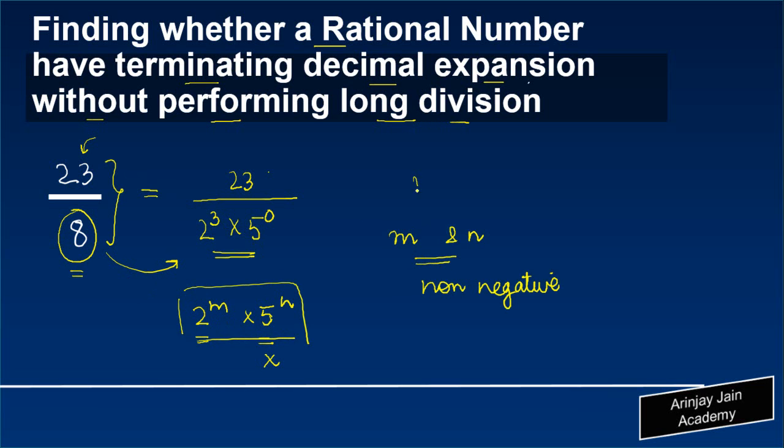In our case, m is equal to 3 which is a non-negative integer and n is equal to 0 which is also a non-negative integer. So effectively both m and n are non-negative integers and this expansion can be written as 2 to the power 3 into 5 to the power 0, so that means this will have a terminating decimal expansion.